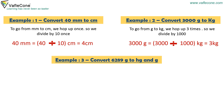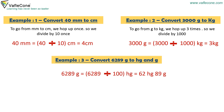Example 3. Convert 6289 grams to hectograms and grams. 6289 grams is equal to 6289 ÷ 100 hectograms, which equals 62 hectograms and 89 grams.